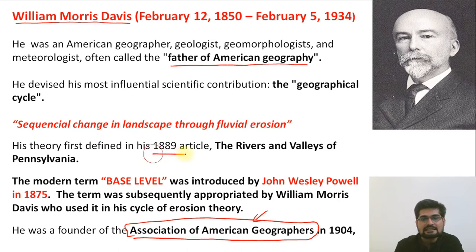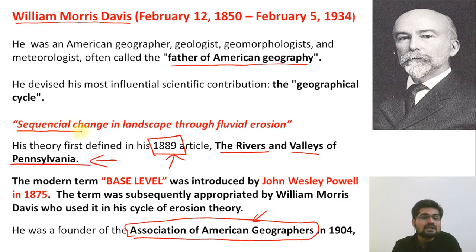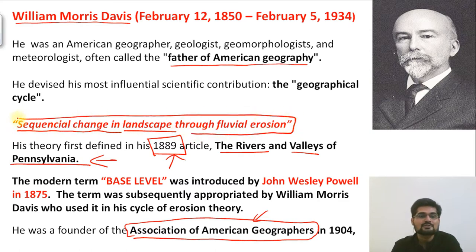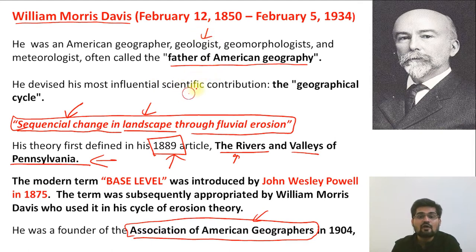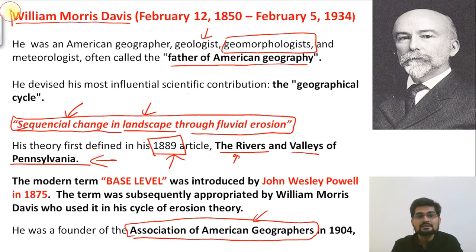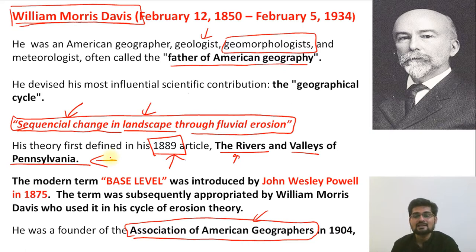His important contribution in 1889 is his work on rivers and valleys of Pennsylvania, in which he talked about sequential change in landscape through fluvial erosion. Davis did not talk about structure, process, or stage in this first work — he basically talked about sequential change in landscape. Being the first geographer coming from a geological background, geomorphology became one of the major pivots in American geographical thought.